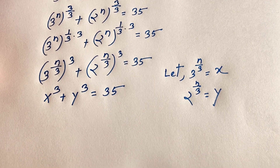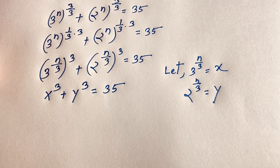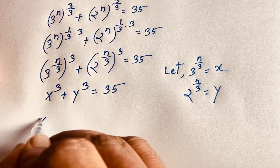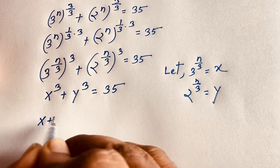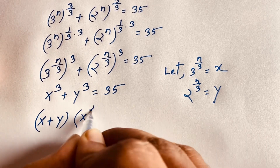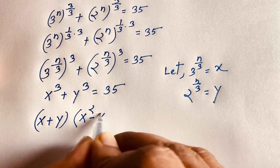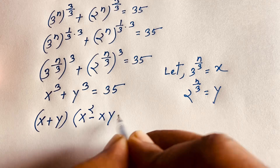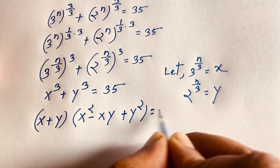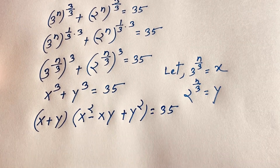Using the sum of cubes factoring rule, a³ + b³ = (a + b)(a² − ab + b²), we get: (x + y)(x² − xy + y²) = 35.